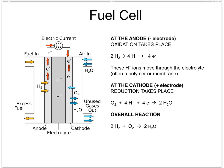The hydrogen ions move through the electrolyte, which is made of acid and therefore already contains hydrogen ions.